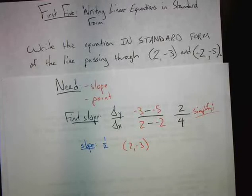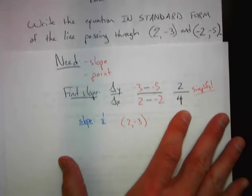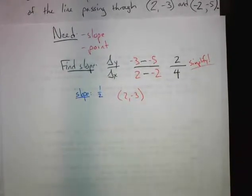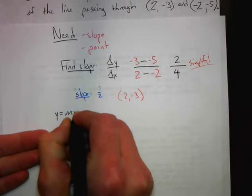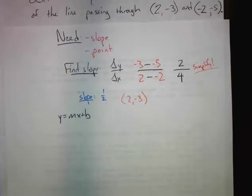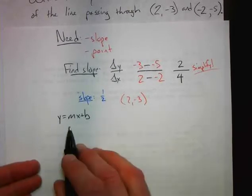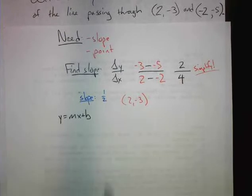Now I'm going to show you two different ways to write our linear equation. From previous notes, we had y equals mx plus b. In those previous notes, we knew we had a y, an m, and an x, and the only thing we needed to find was b. So we're going to do just that.